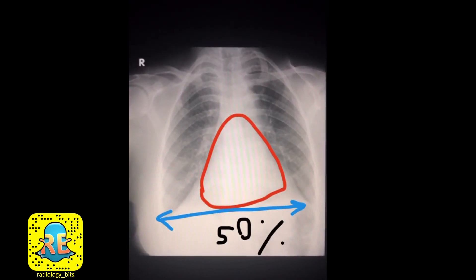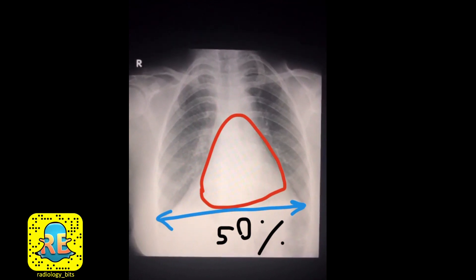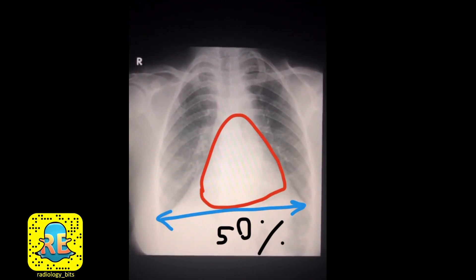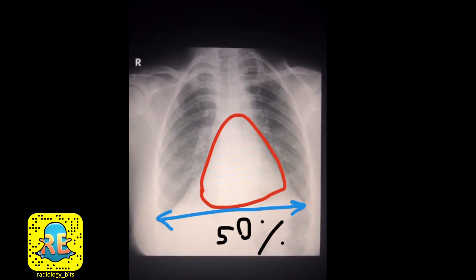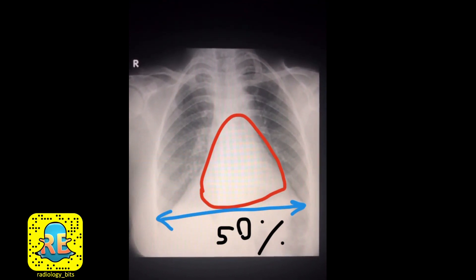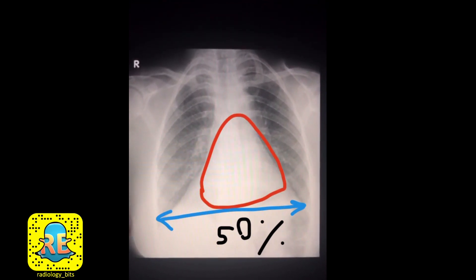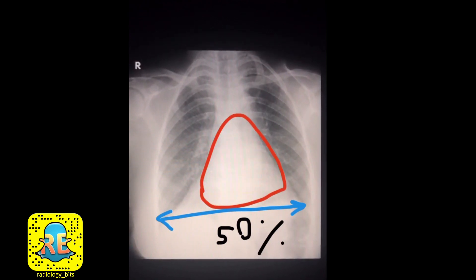The basic rule is that for us to call cardiac enlargement, you compare the size of the heart to the size of the chest. That's what we call the cardiothoracic ratio, and if it's more than half — so more than 50 percent — you're usually talking about cardiomegaly.